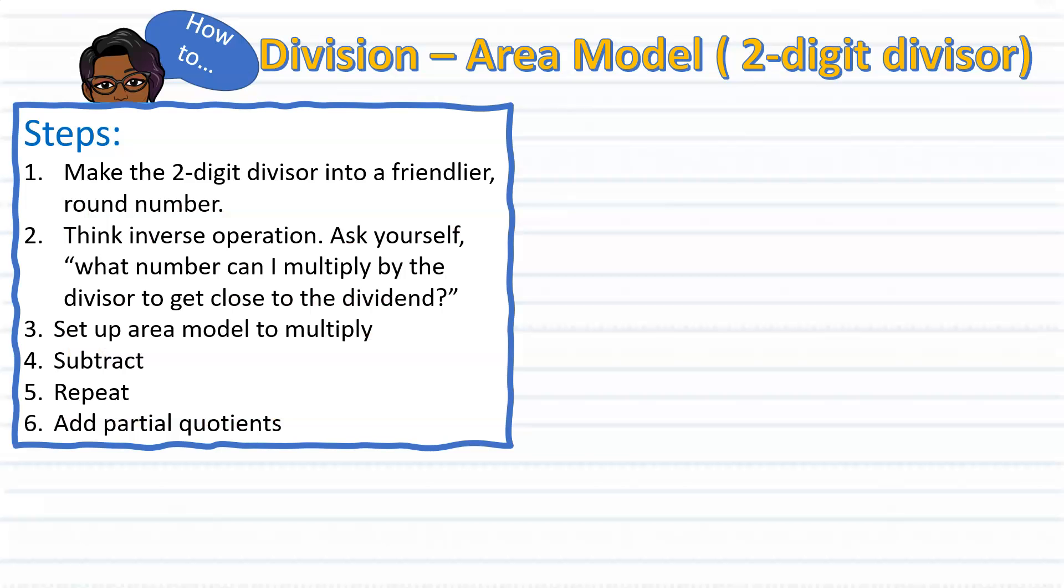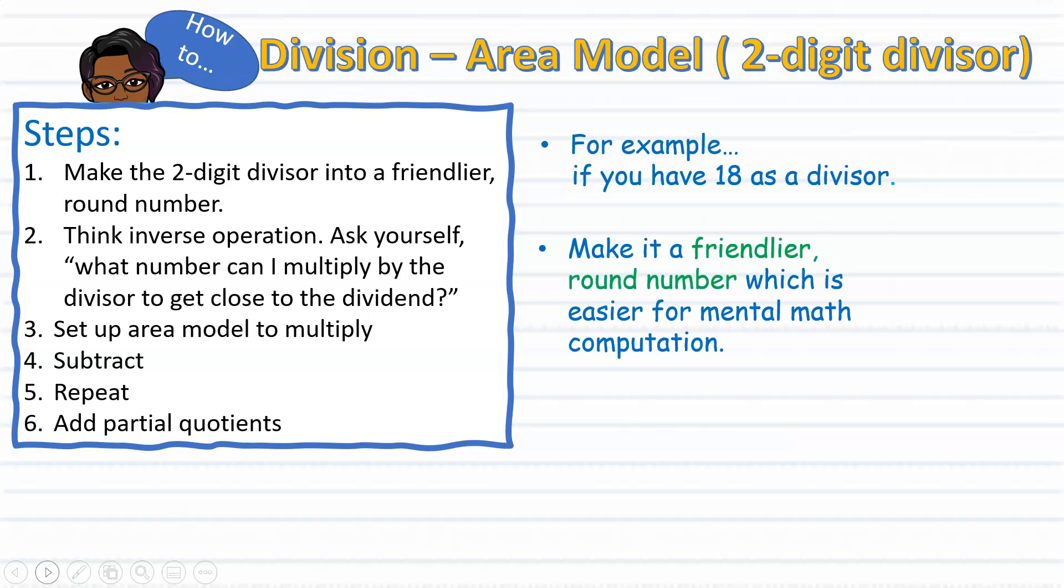Here we have an outline of steps on how to divide using the area model. When dividing with a two-digit divisor, encourage your child to use friendlier round numbers. For example, if you have 18 as a divisor, make it a friendlier round number, which will make it easier for mental math computation. 18? Instead, think 20.